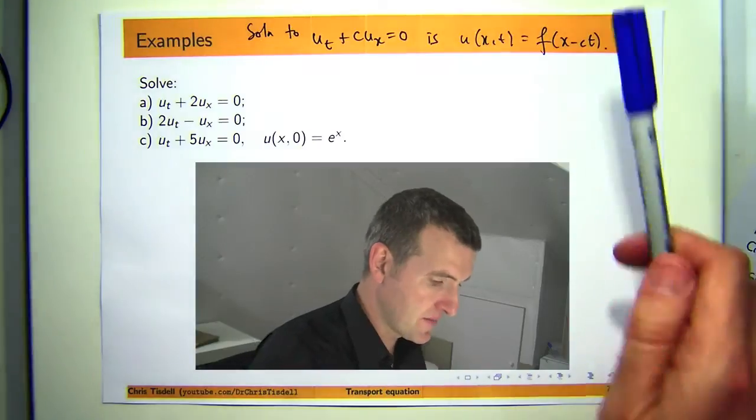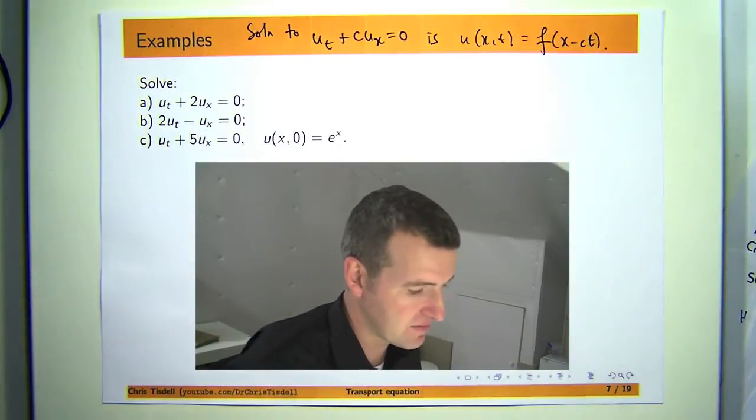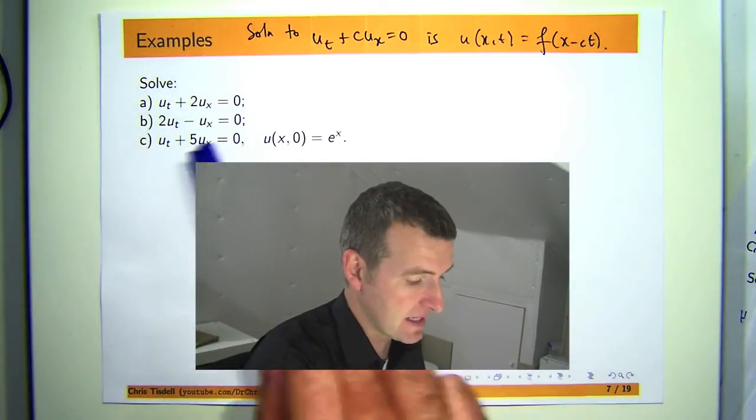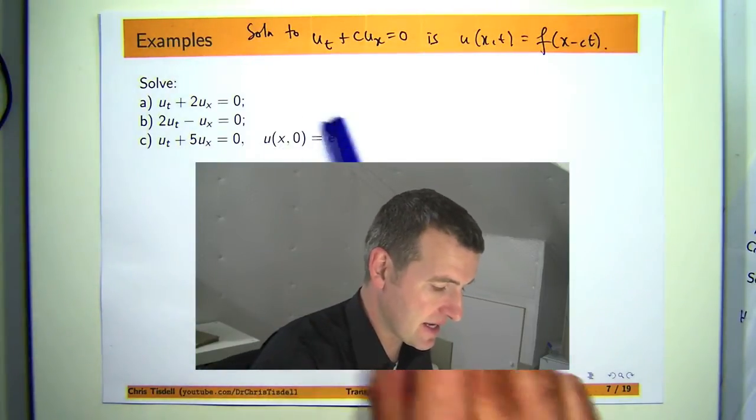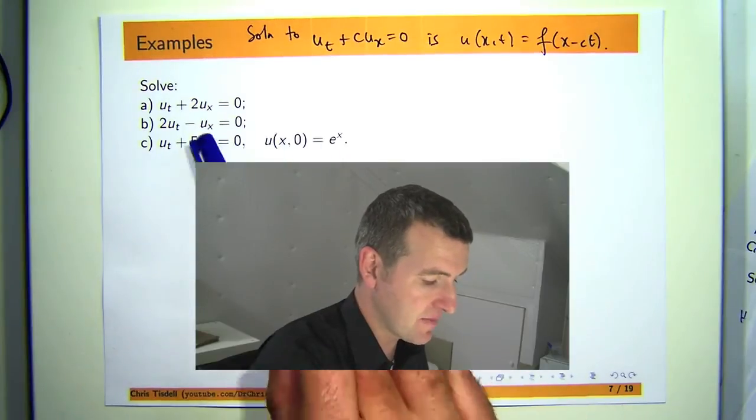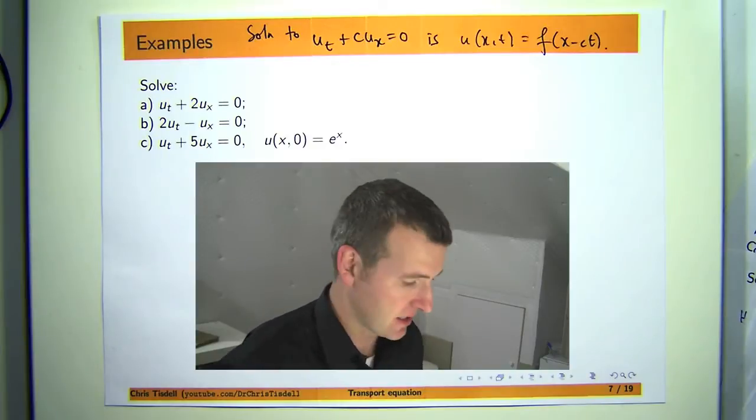So essentially we're going to identify C in each of these problems and just write down the general solution. Now part C, you'll notice some extra information here. This is an initial condition and if you couple the PDE with an initial condition, sometimes it's called a Cauchy problem.